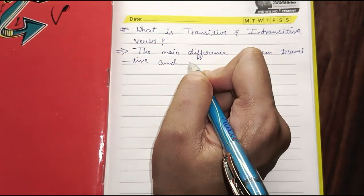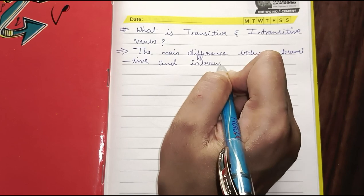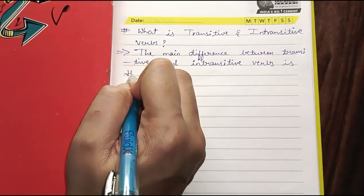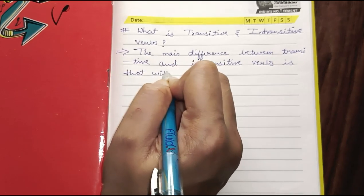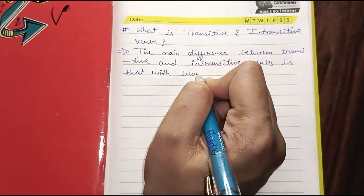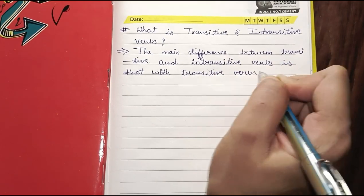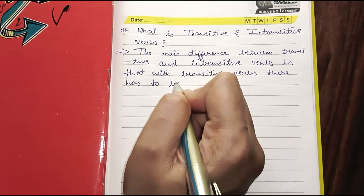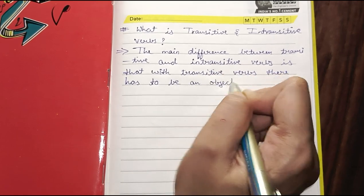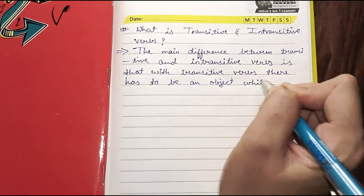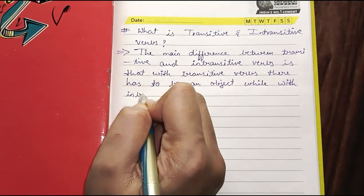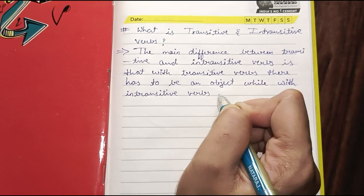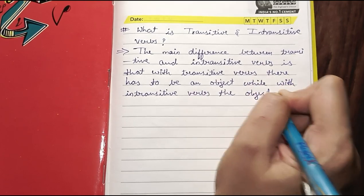What is a transitive verb? The main difference between transitive and intransitive verbs is that with transitive verbs there has to be an object, while with intransitive verbs the object is not required.